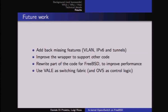Future work includes adding back missing features such as VLAN support, tunnels, and IPv6, cleaning up the wrapper, and potentially rewriting parts of the hash table module to improve performance — not just for FreeBSD but also in Linux generally.